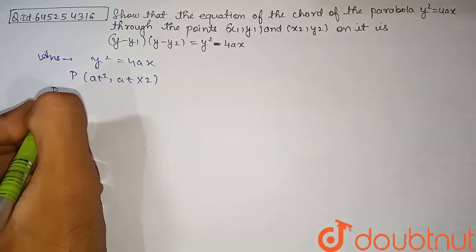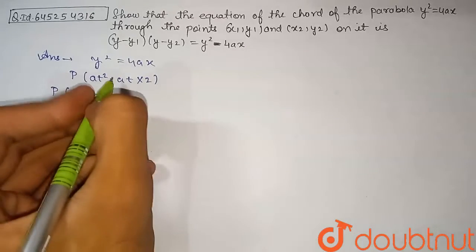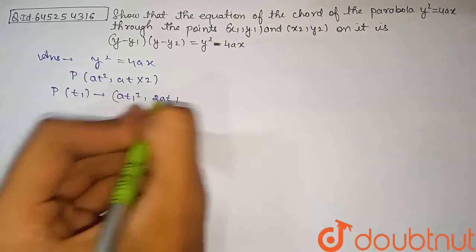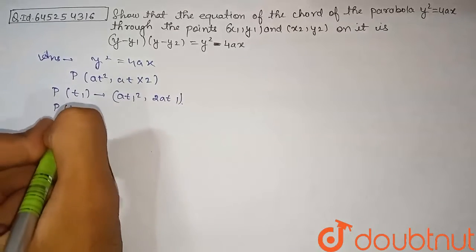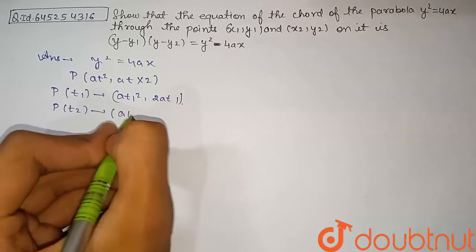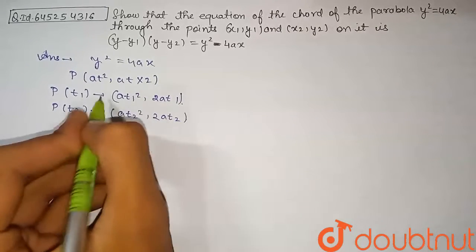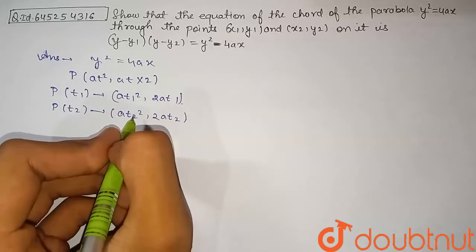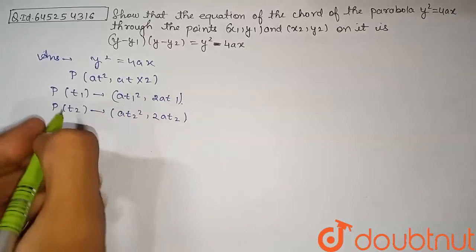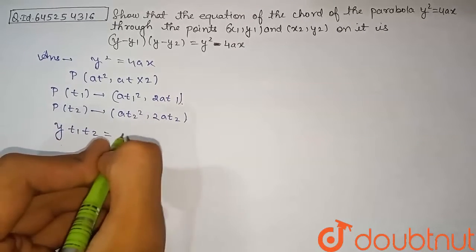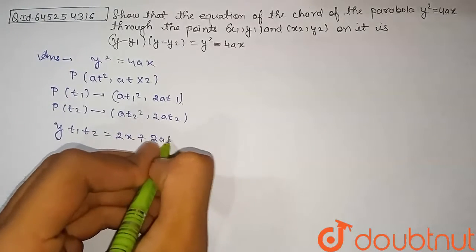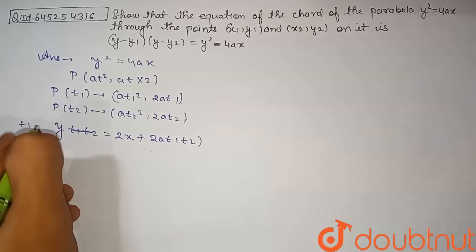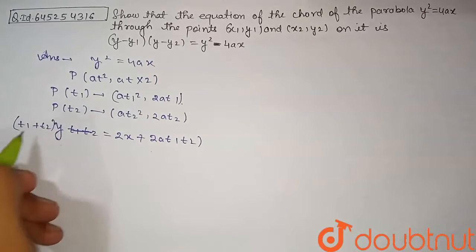The first point is P(t1) with coordinates (at1², 2at1) and the second point is P(t2) with coordinates (at2², 2at2). In terms of these four coordinates, the equation of the chord is y(t1 + t2) = 2x + 2a·t1·t2. This is the basic general equation of the chord.